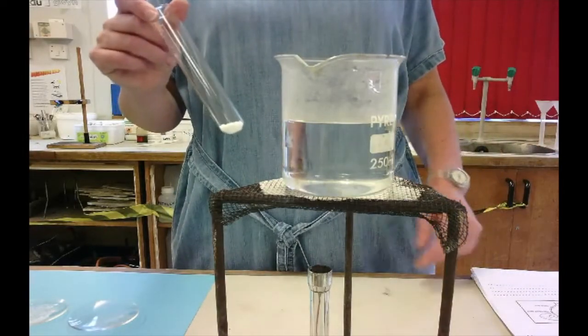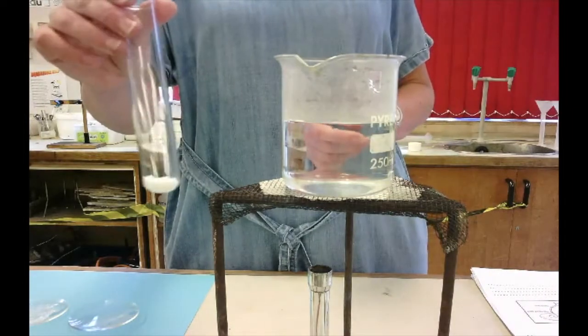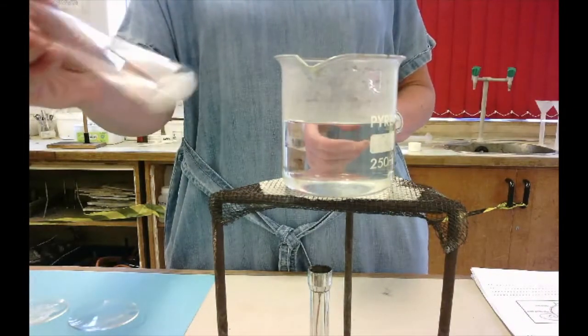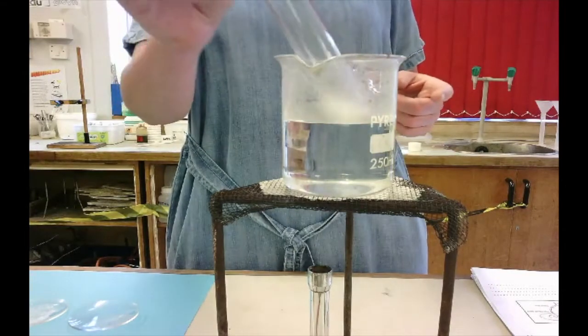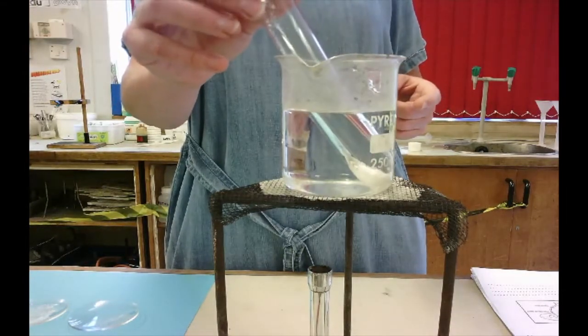Heating things up, cooling things down. I've got here something called salol, which is a white solid. I'm going to put it into a beaker of water. You can see the beaker's hot. I've just put it on top of the Bunsen.